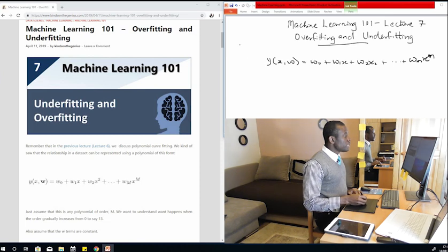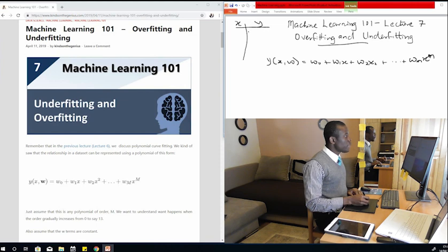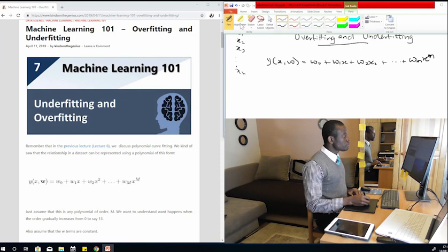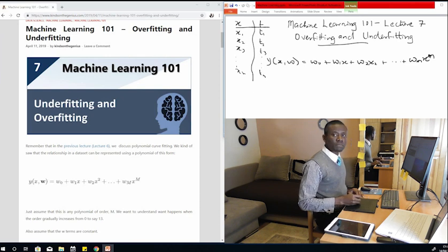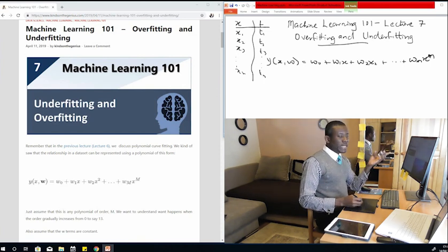Let's assume you have this dataset. We have x and we have y. And we have x1, x2, x3 all the way to xn. We also have t1, t2, t3 to tn.